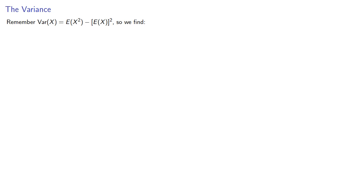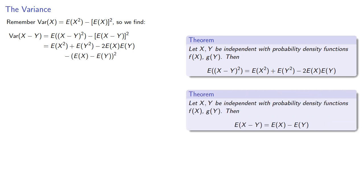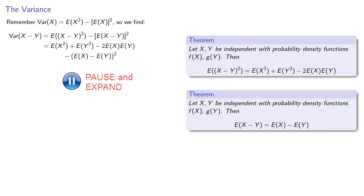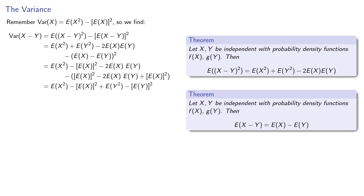Remember, the variance of a random variable is the expected value of the square minus the square of the expected value. So we can write the variance of the difference X minus Y as E[(X-Y)²] minus (E[X-Y])². Substituting in the expected value of the square of the difference, and noting that E[X-Y] = E[X] - E[Y], we expand and simplify. After simplification, we have E[X²] minus (E[X])², which is just Var(X), plus E[Y²] minus (E[Y])², which is Var(Y).